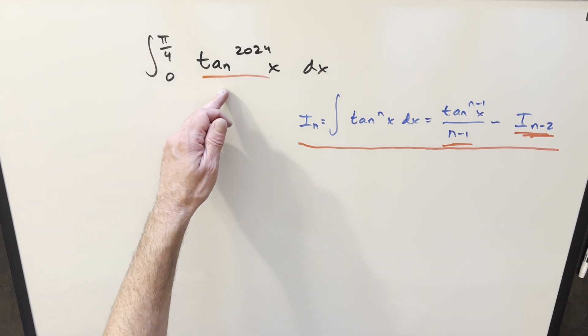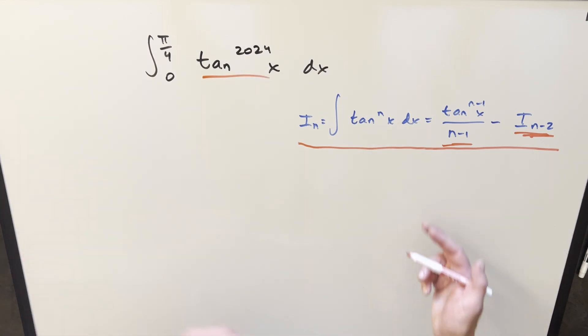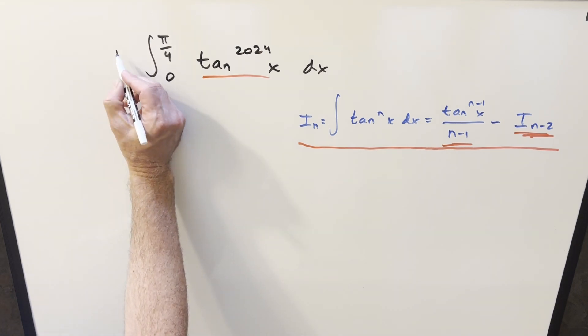After I did this one, I was thinking, what are the interesting applications? Because if this were an indefinite integral, you wouldn't want to use the formula 1,012 times. But for this one, it actually works out pretty nice and helps that we've got nice bounds on it too.